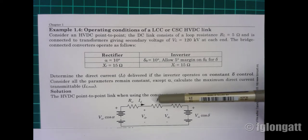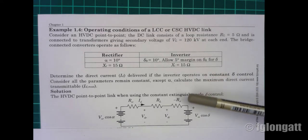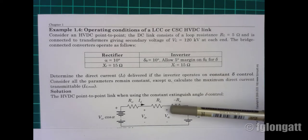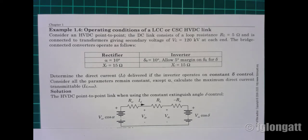The loop resistance shown here is equivalent to 5 ohms as stated in the problem. There is a minus sign in the model — don't be alarmed — that resistance uses the equivalent reactance of the inverter. The negative sign arises because of the voltage drop that occurs during commutation.